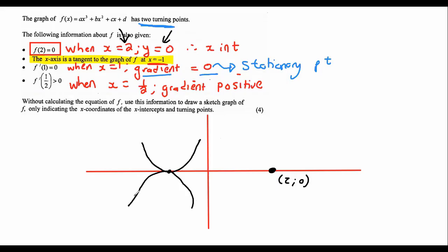They then say, when x is 1, the gradient is 0. So when x is 1, we have another turning point. But now, so x is 1 is somewhere over here. But we don't know where that turning point is. It's somewhere along this line.